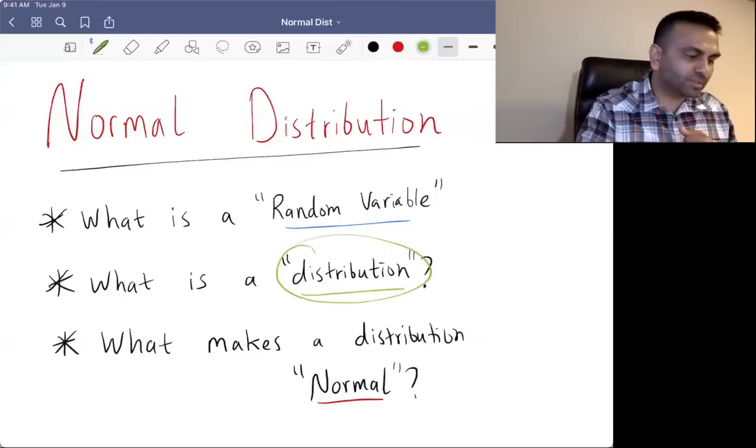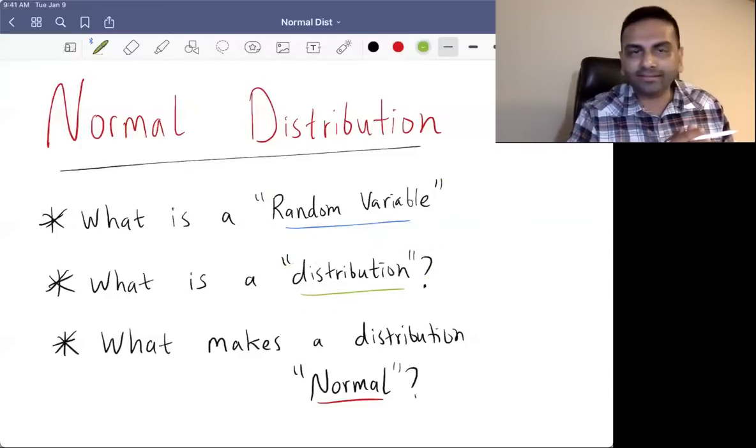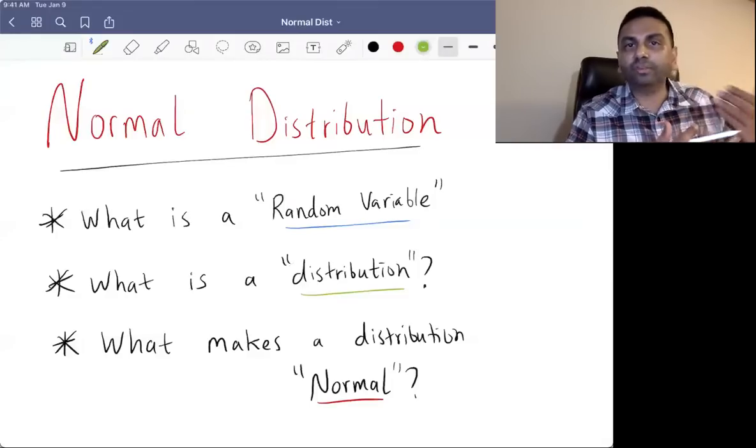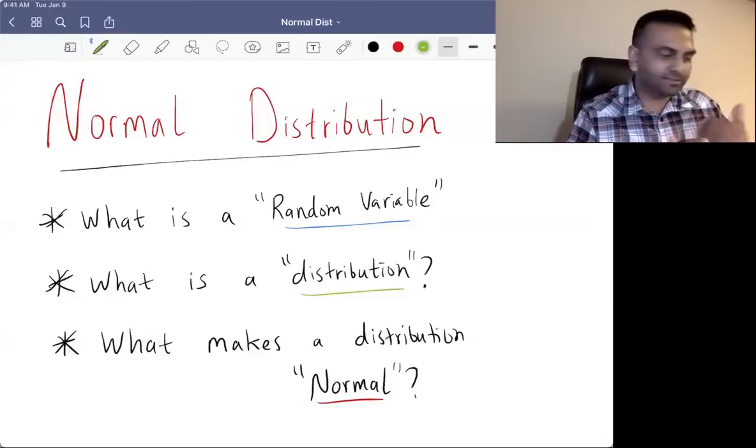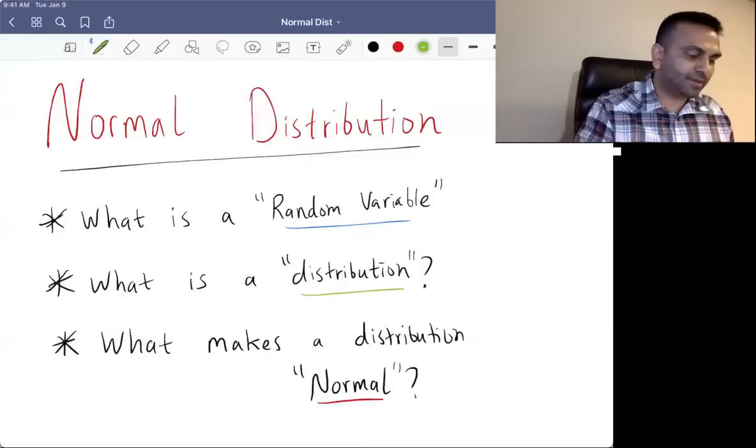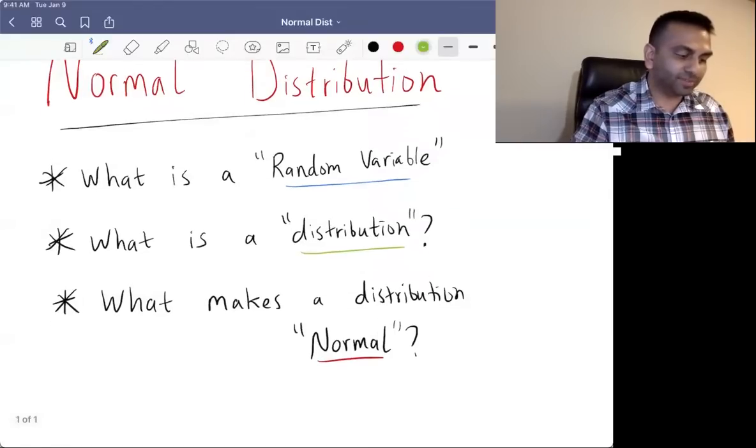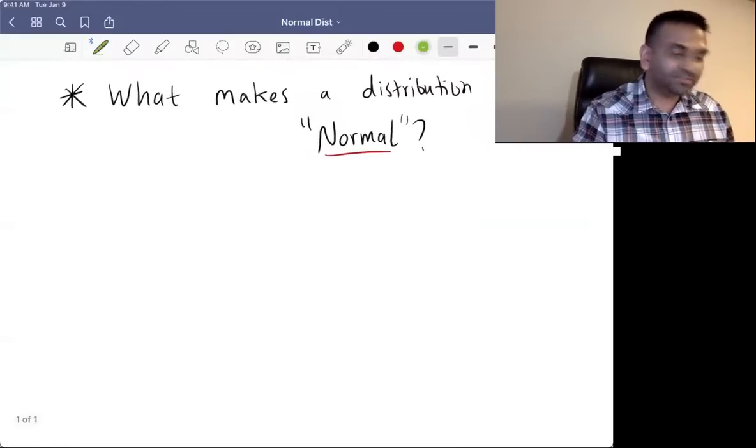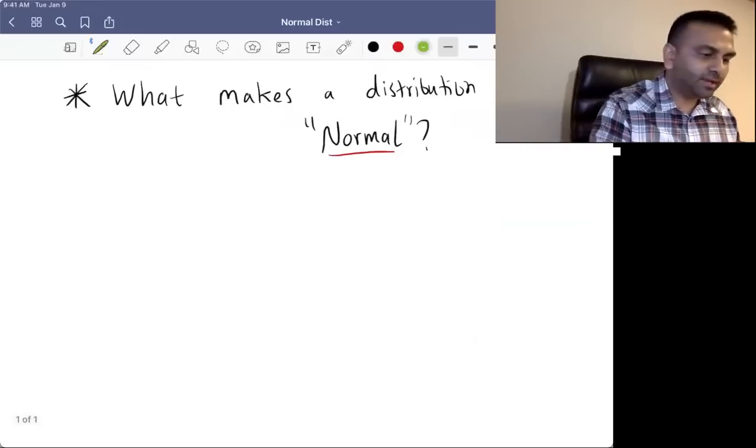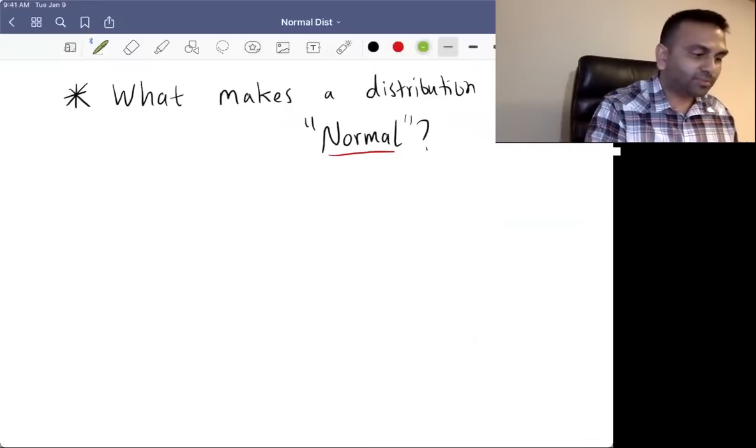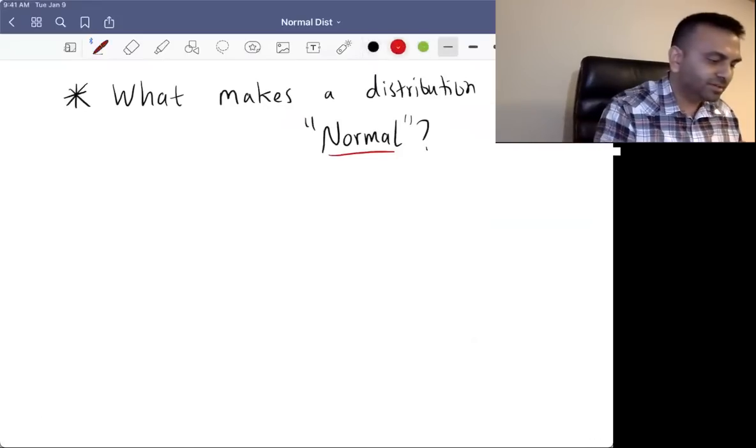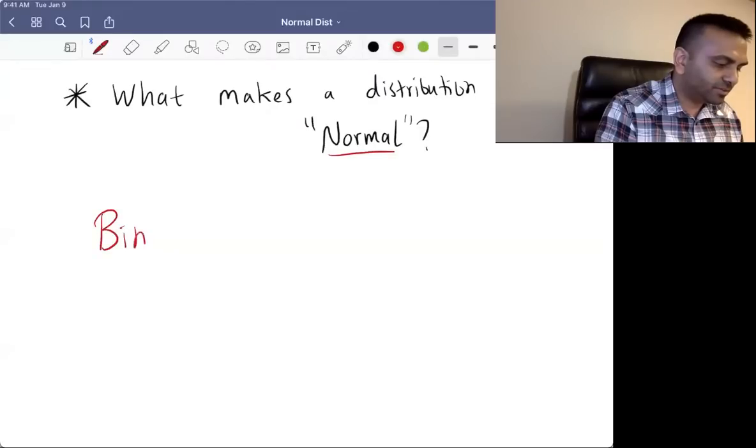So that really brings us to then what's a distribution? Distribution and random variable, these sort of go hand in hand. So every random variable has a distribution that it comes from. It's giving you information about that random variable. So what are examples of distributions? Well, a really simple distribution is called the binomial distribution. And that's where the random variable can take on one of two values.